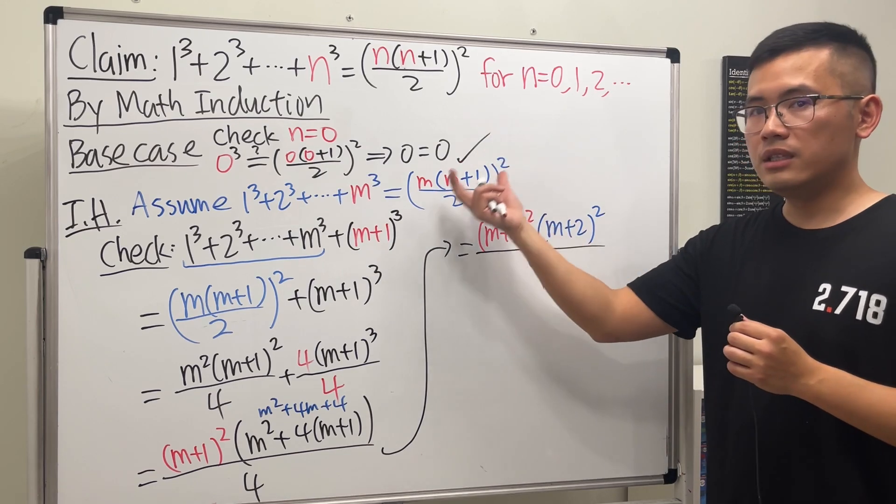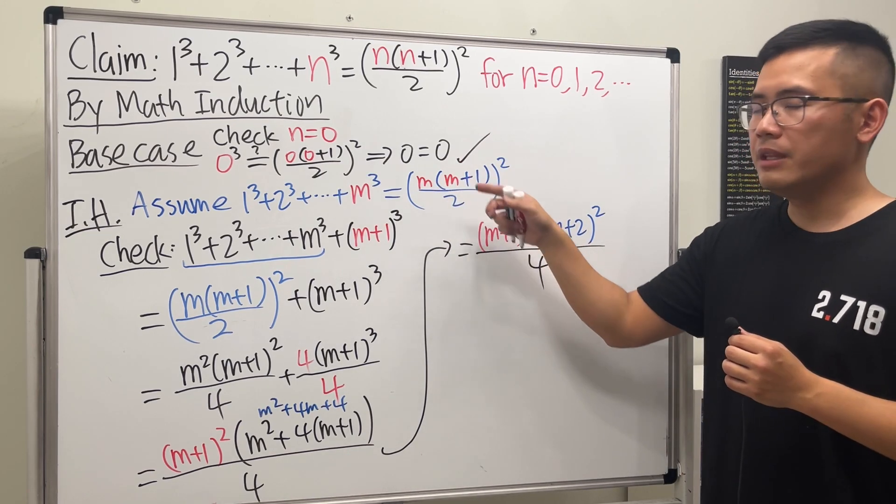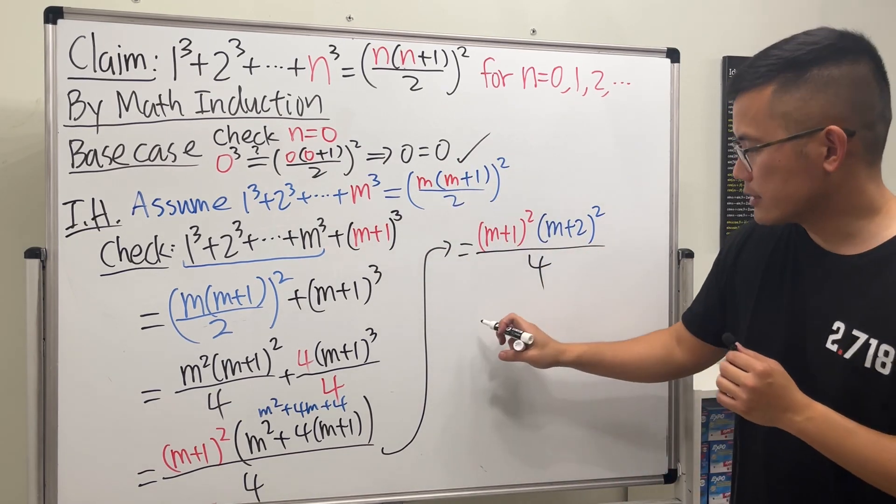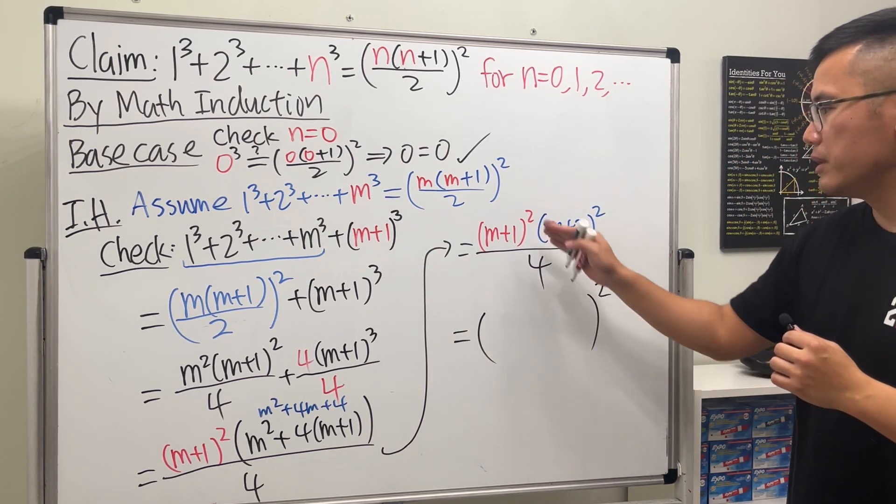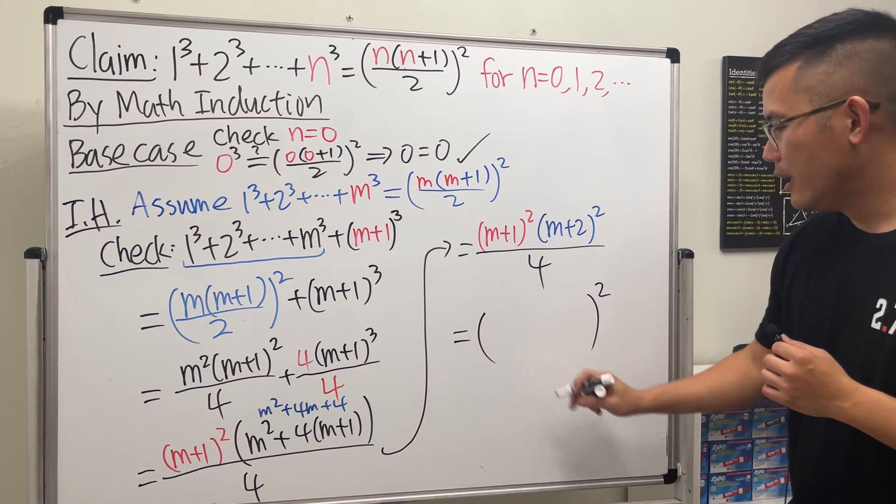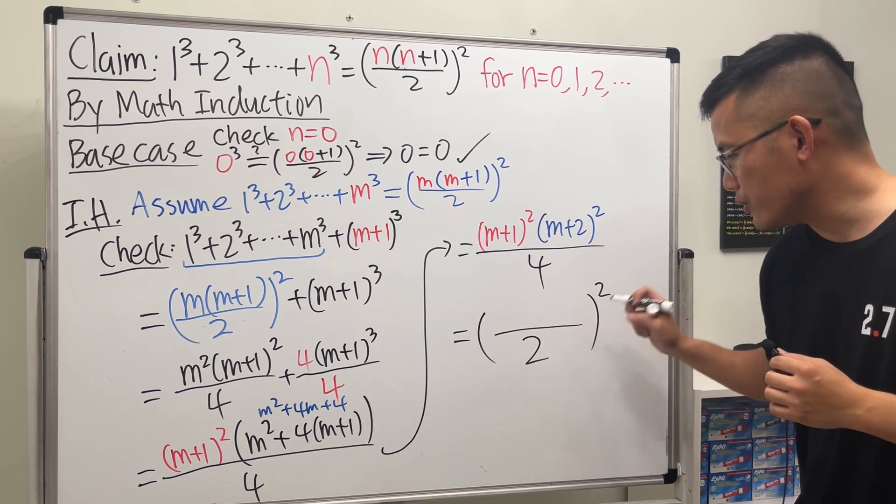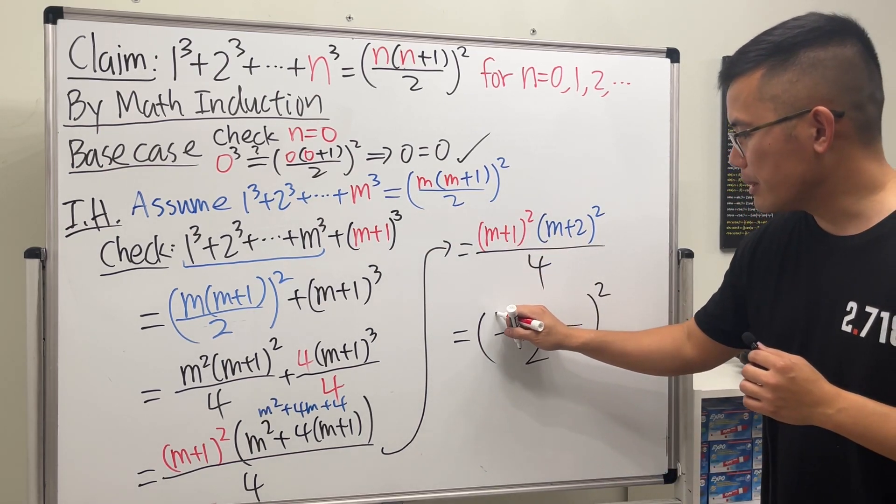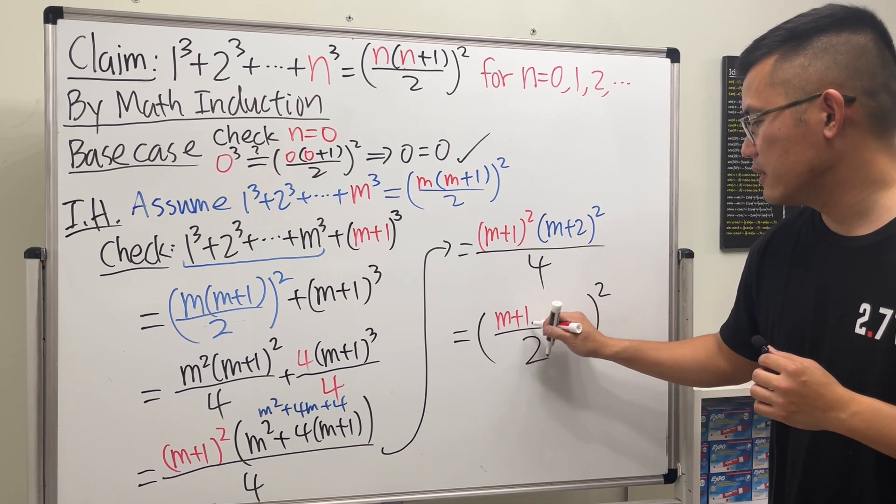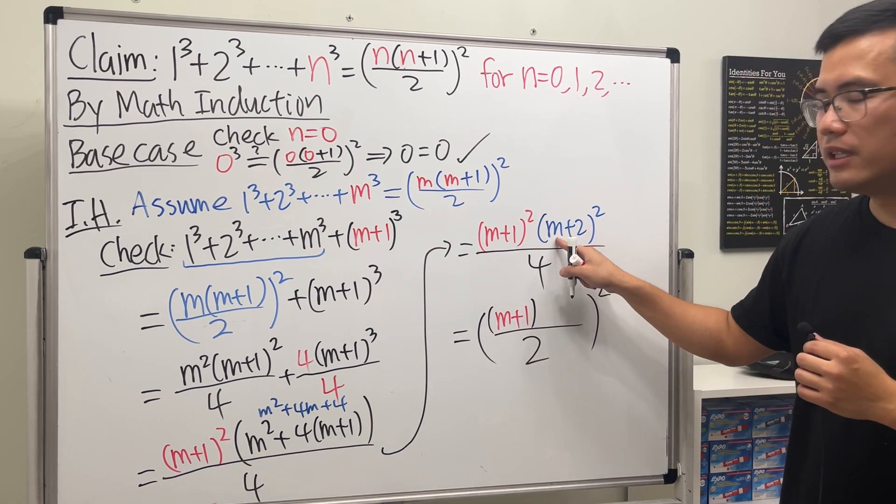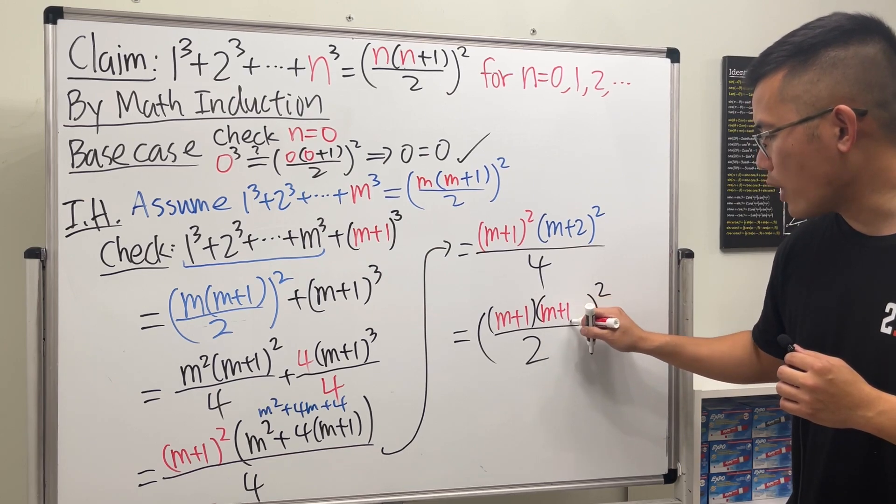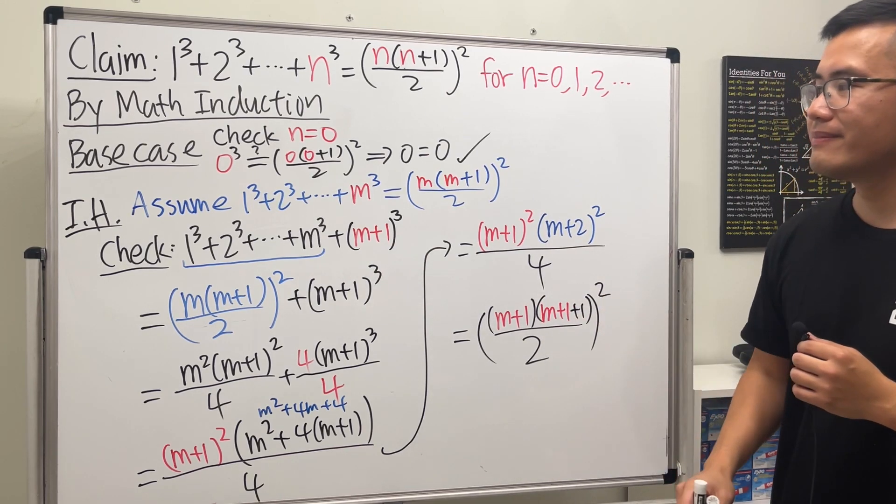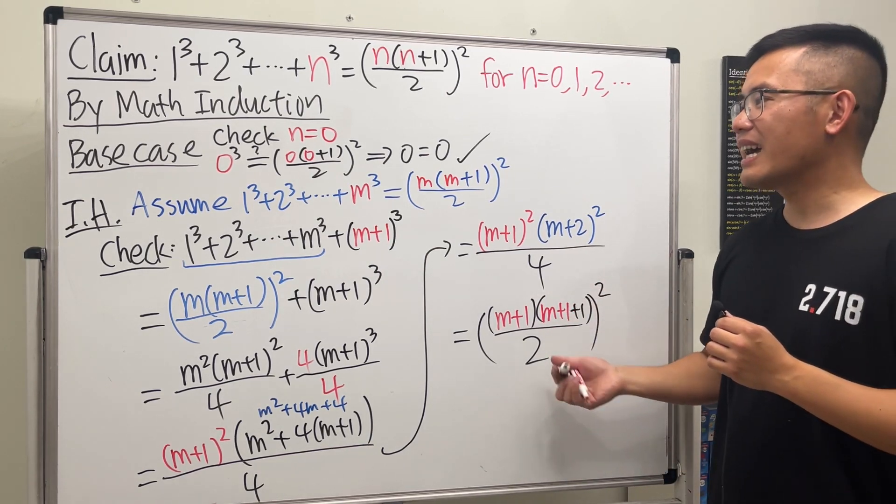When we do that, we get (m+2)² on the bottom. We have 4. Now we want to write this expression in this form, and hopefully this n is like m+1. So let's go ahead and do this. Put a big parentheses squared, because everybody has a square. On the bottom we can put it as 2. This right here is m+1—that's excellent. But then for the m+2, I'm going to rewrite it right here as (m+1) and then +1. Tada!